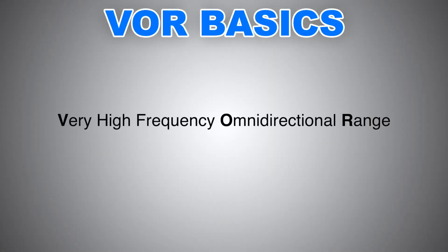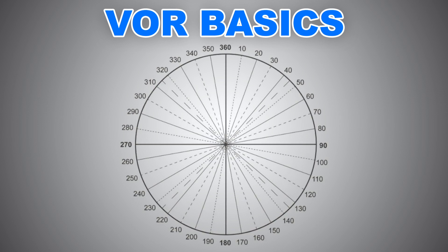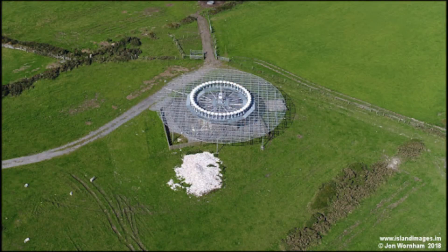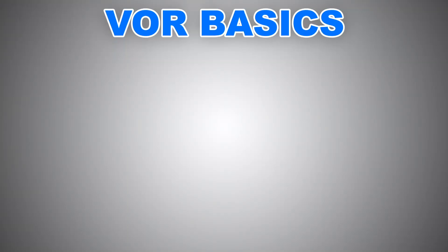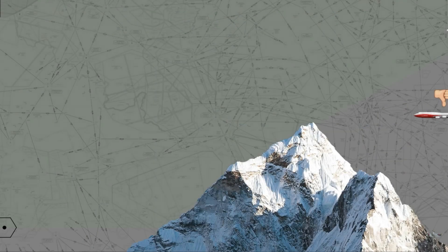VOR stands for Very High Frequency Omnidirectional Range. The word 'omni' means in all directions, or 360 degrees. It is a navigational aid, or navaid for short, used for both enroute navigation as well as non-precision approaches. VORs operate in the VHF band frequency from 108 MHz to 117.95 MHz, both inclusive.